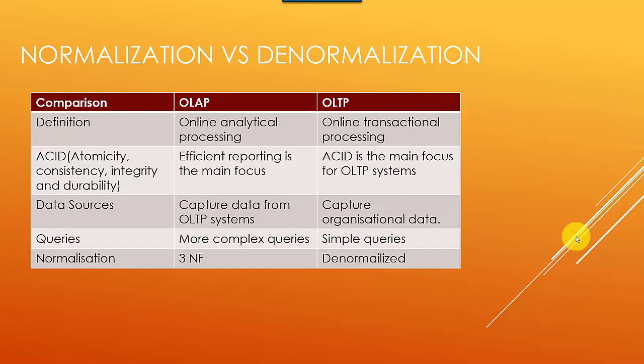OLAP systems tend to have more complex queries, while OLTP systems have simpler queries, because complex queries make it very difficult to maintain transactional integrity. In terms of normalization: OLAP systems are highly denormalized, while OLTP systems are essentially in third normal form. You can read more about first, second, and third normal form if you wish.